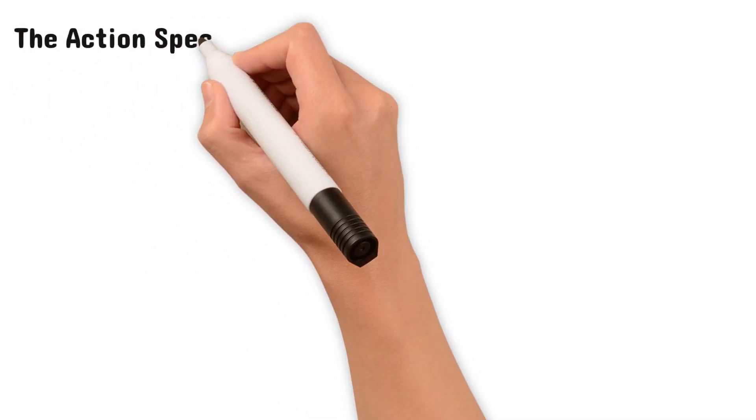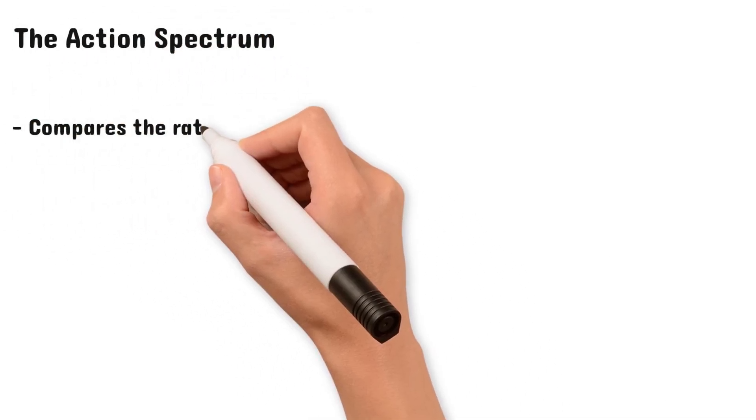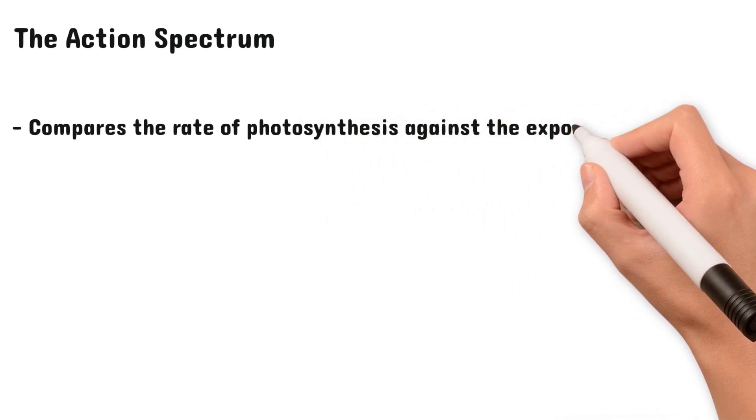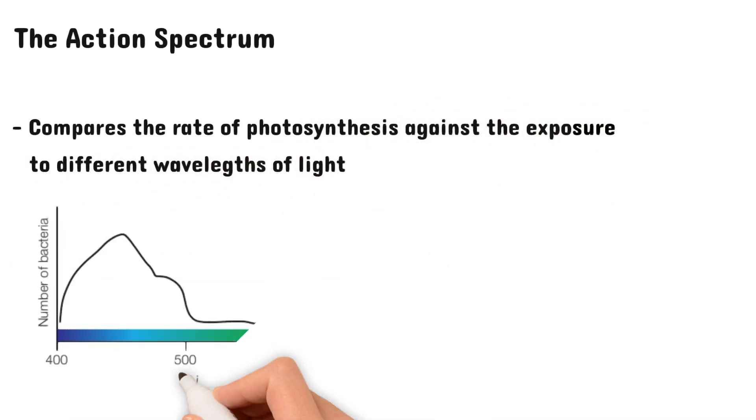From this emerges the action spectrum. The action spectrum compares the rate of photosynthesis to the exposure to different wavelengths of light.